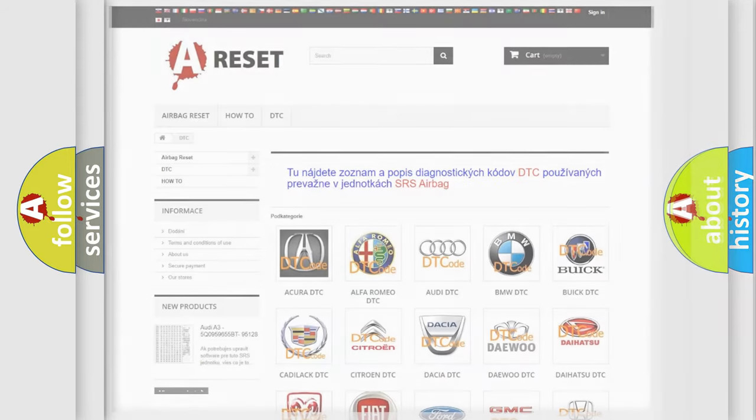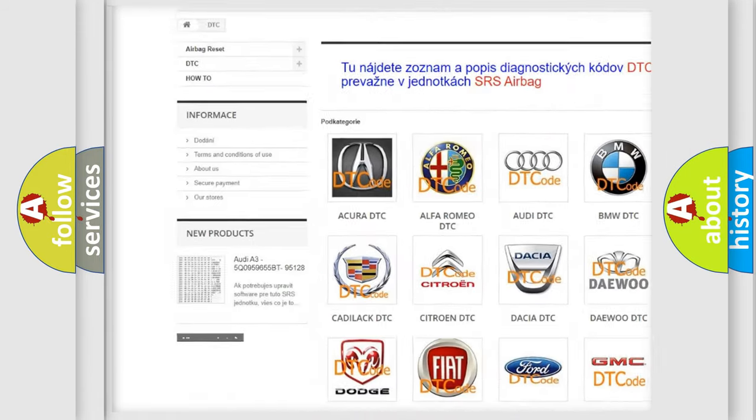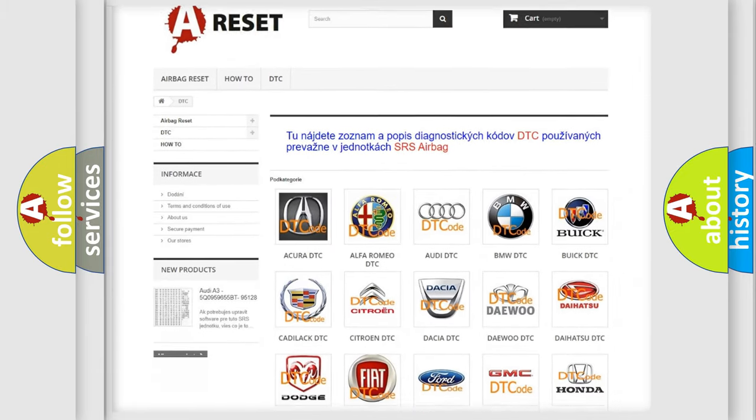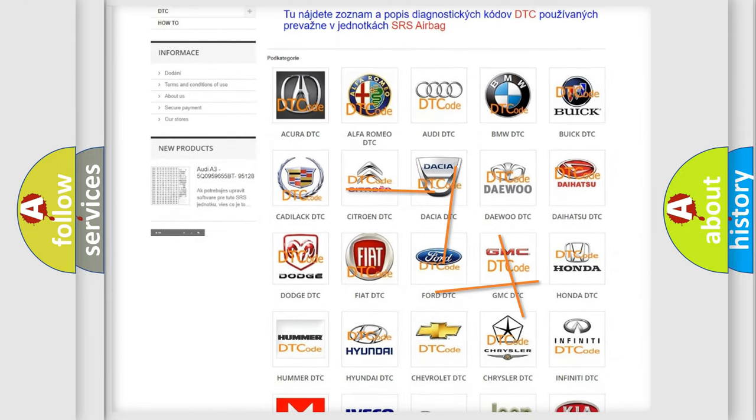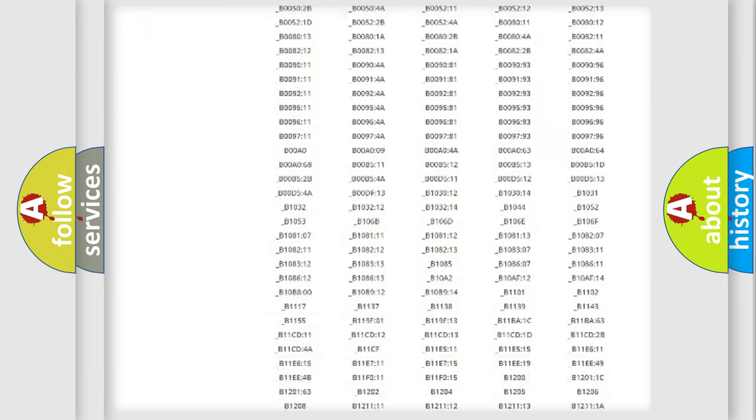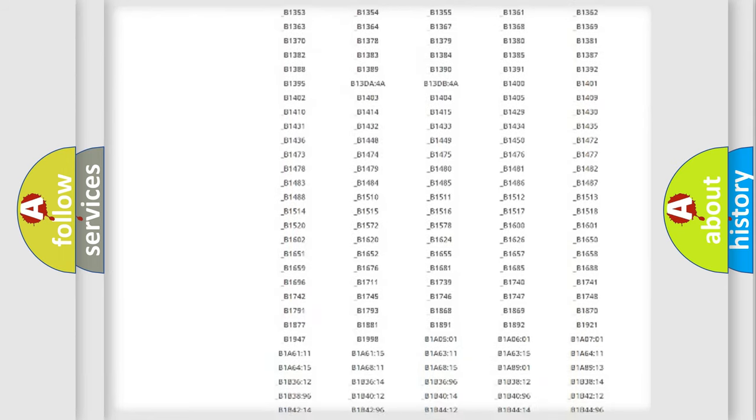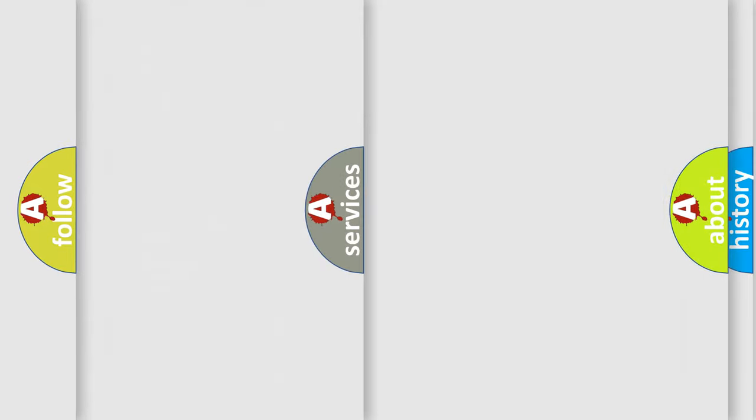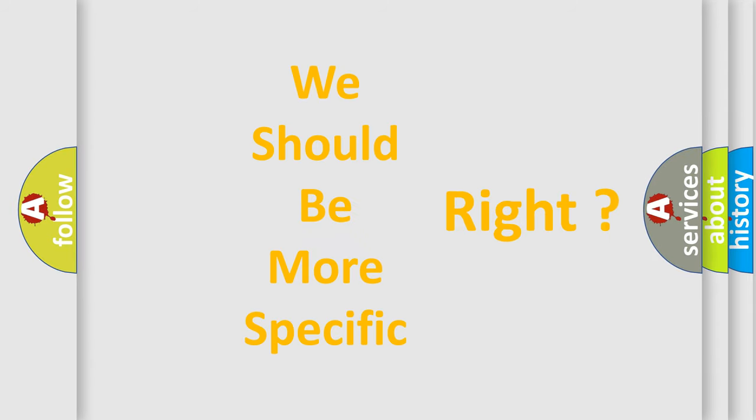Our website airbagreset.sk produces useful videos for you. You do not have to go through the OBD2 protocol anymore to know how to troubleshoot any car breakdown. You will find all the diagnostic codes that can be diagnosed in a car, also many other useful things. The following demonstration will help you look into the world of software for car control units.